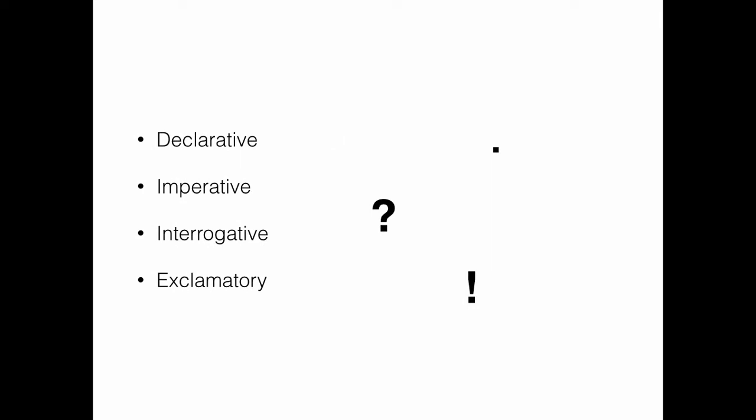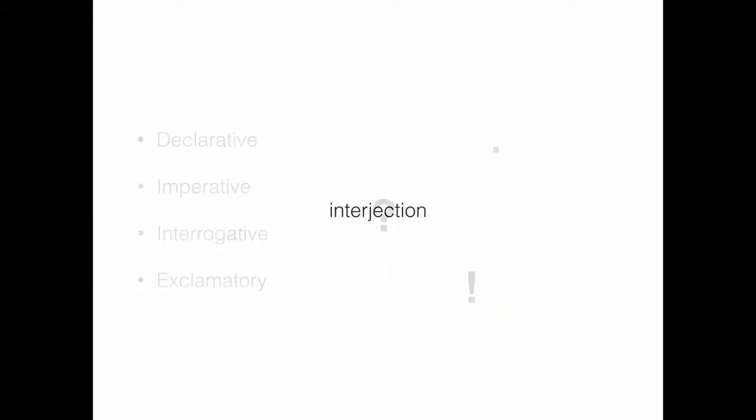Every sentence begins with a capital letter and ends with some kind of punctuation — a period, an exclamation point, or a question mark. And then we have this other thing called an interjection. An interjection is not a sentence. This means it's not a complete thought with a subject and a predicate. However, we still begin an interjection with a capital letter and end with some kind of punctuation, usually an exclamation point. More on that in a moment.